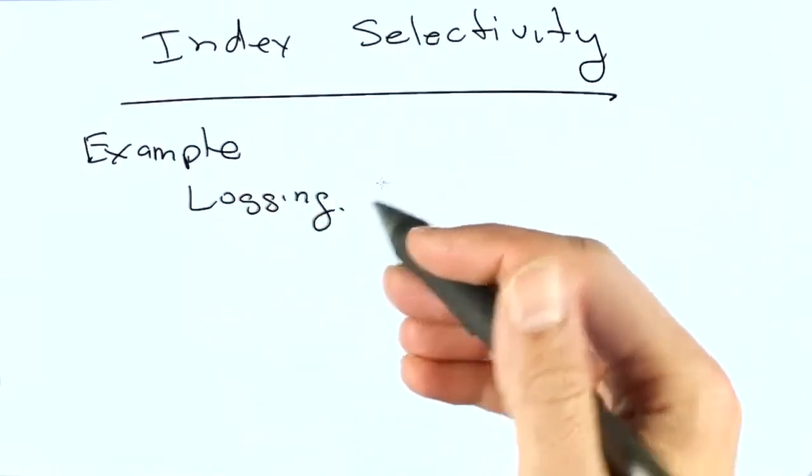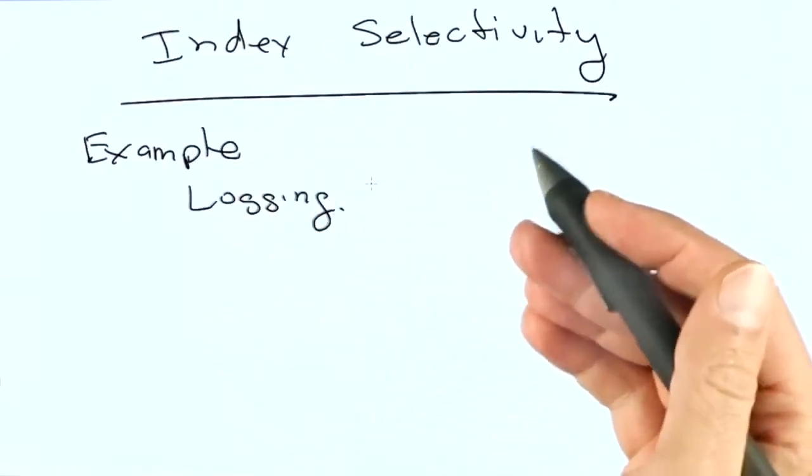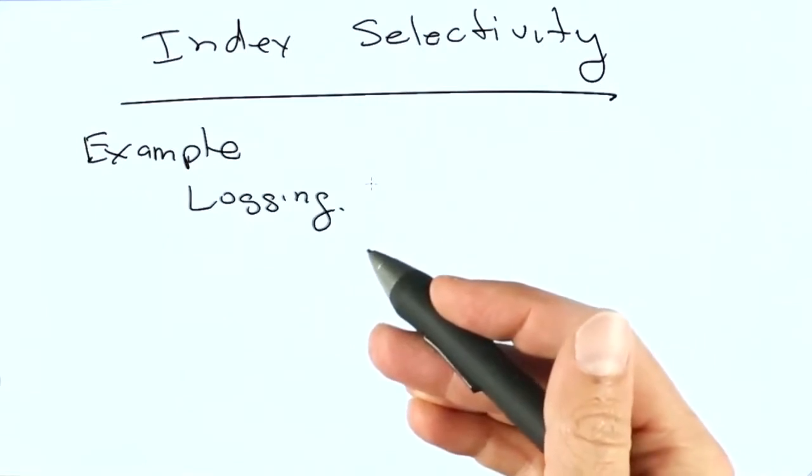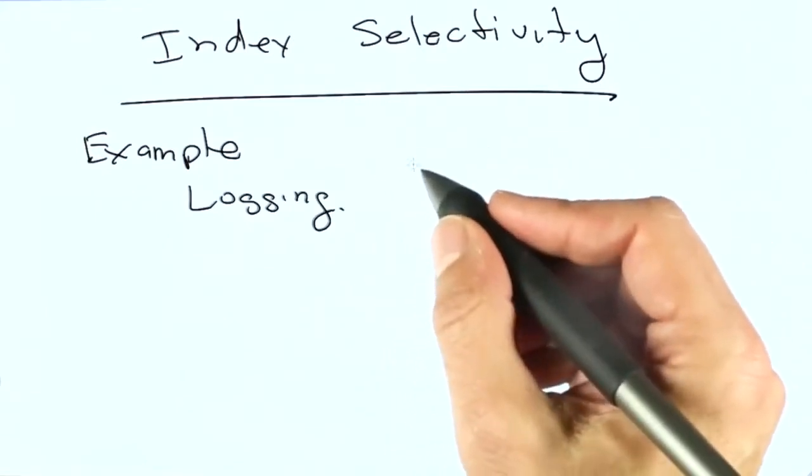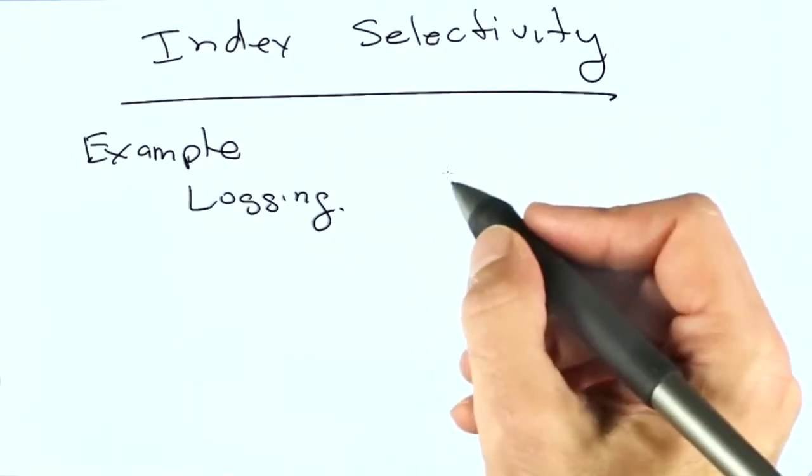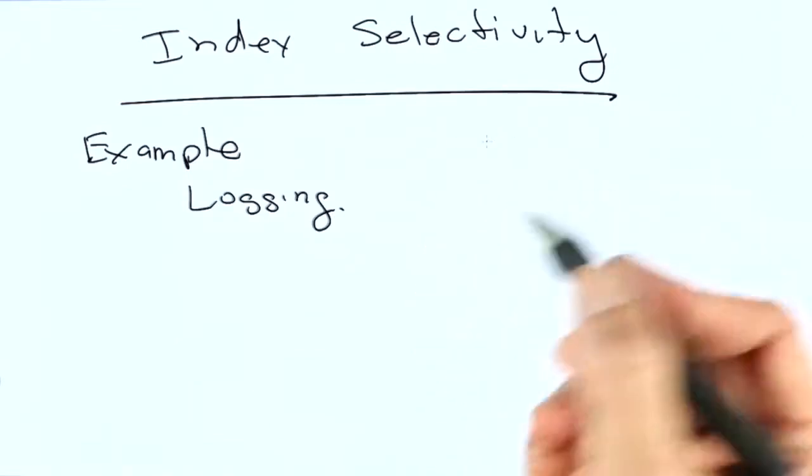When designing your indexes, you want them to be as selective as possible. Now this is a concept that is really no different than the world of relational databases, but when you're choosing a compound index, if you don't choose something that's selective, then there isn't a lot of value to specifying that field.